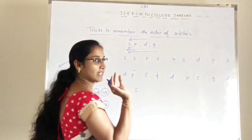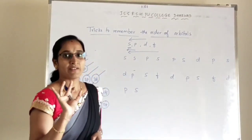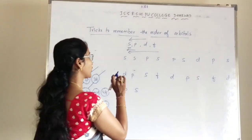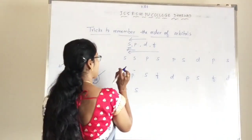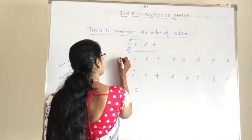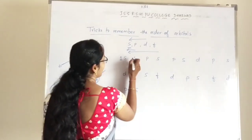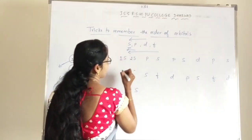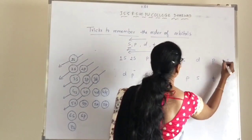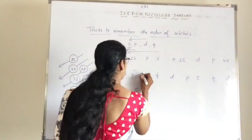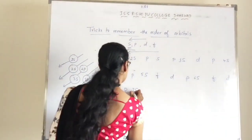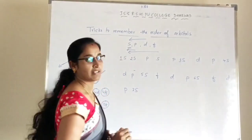Now for the S orbital — we consider only the S atomic orbital and give numbers in increasing order: 1, 2, 3, 4, 5, 6, and 7. So the S orbitals are numbered 1S through 7S.